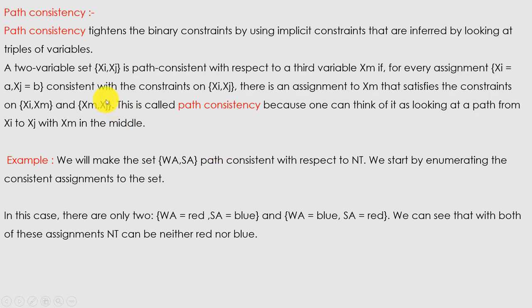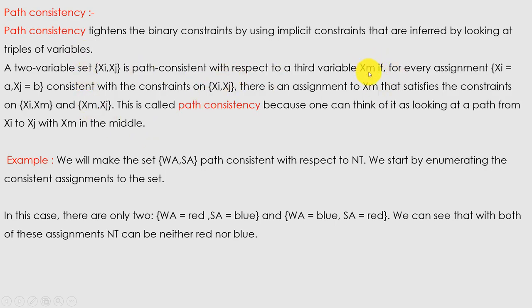Now we talk about path consistency. Path consistency tightens the binary constraints by using implicit constraints inferred by looking at triples of variables. A two-variable set {xi, xj} is path consistent with respect to a third variable xm if for every assignment xi = a and xj = b consistent with the constraint on (xi, xj), there is an assignment to xm that satisfies the constraints on (xi, xm) and (xm, xj). One can think of it as a path from xi to xj with xm in the middle — similar to: if a = b and b = c, then a = c.